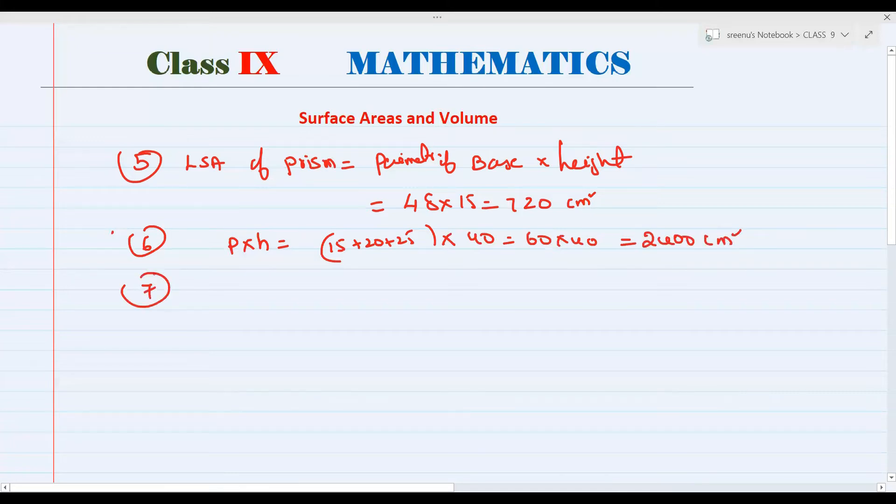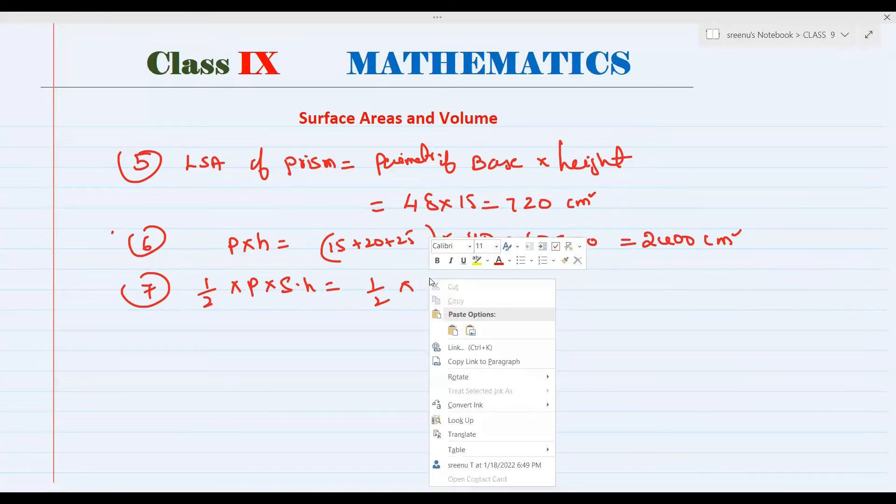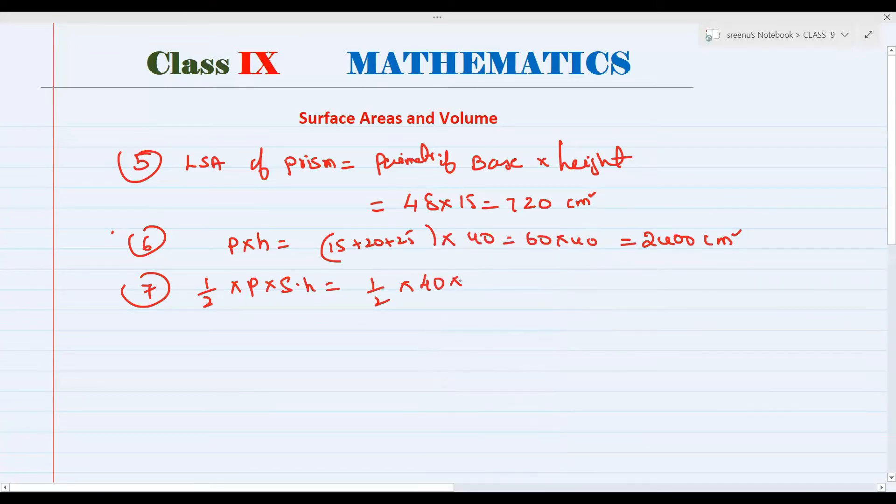And what about seventh answer? Here is right pyramid sir. Pyramid, so that means you have to take 1 by 2, perimeter of the base into slant height. So 1 by 2, perimeter of the base is 40. And height is 5, sorry 20. 25's are 100 centimeters square.